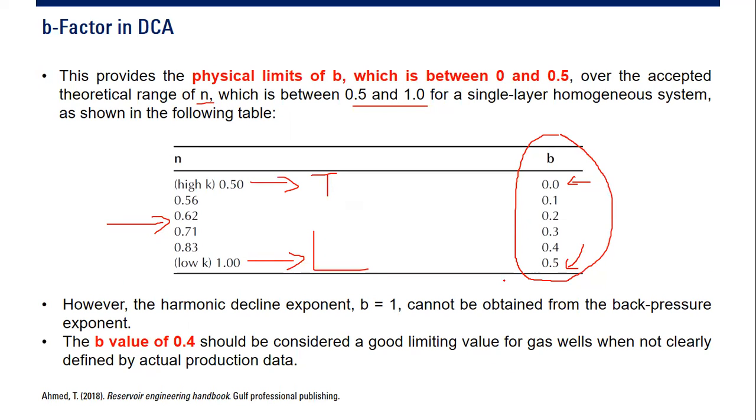So if you have wells in a single layer or homogeneous reservoir, then the limit of your b-factor is between 0 and 0.5. However, the harmonic decline exponent b equals 1 cannot be obtained from the back pressure exponent.